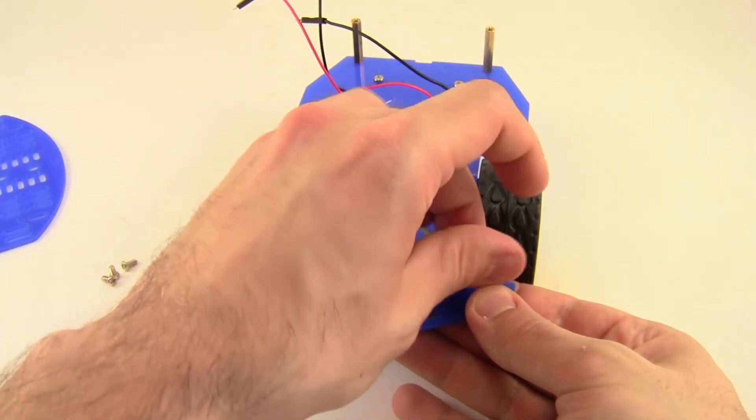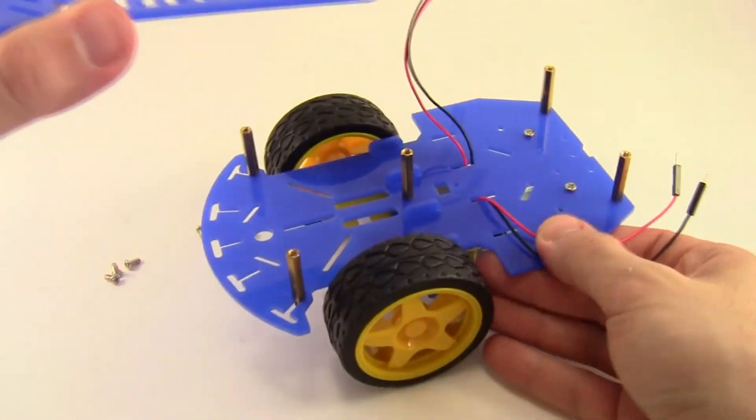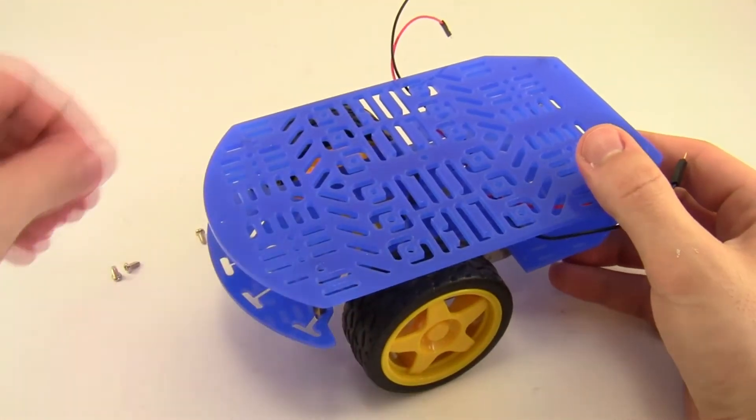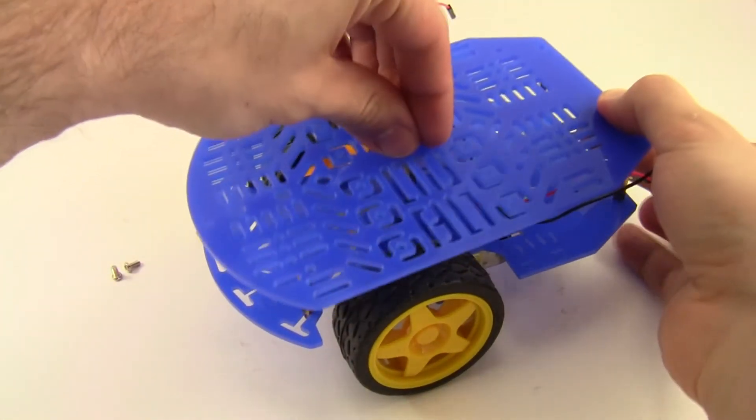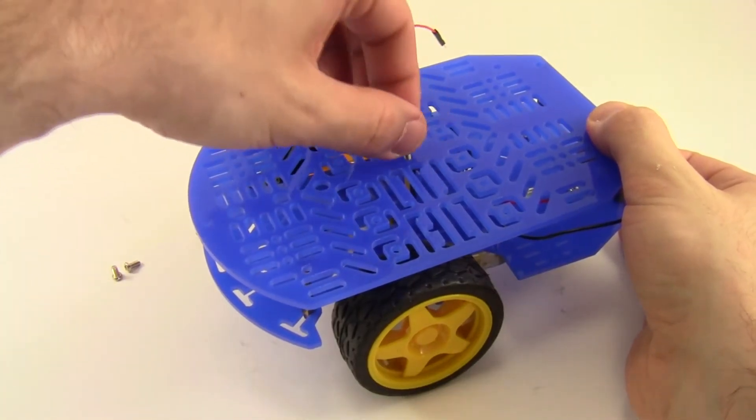Once you have all five standoffs threaded on, you can then take the top plate and line it up with the bottom plate. Make sure the two curved edges are lined up. You can see on the left there, both edges are curved, so you don't get it backwards. And then the screws should go directly through the holes in the top plate and line up with the standoffs in the bottom.